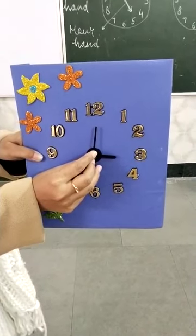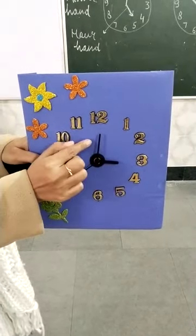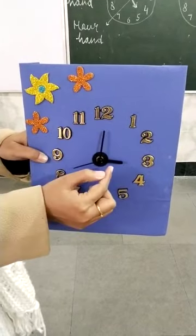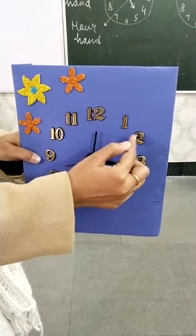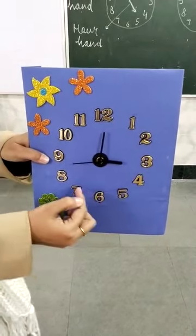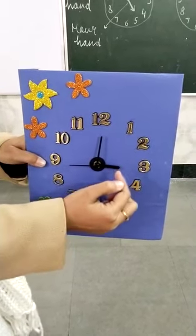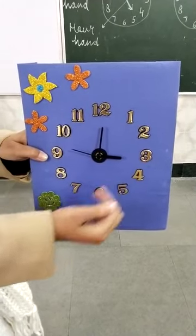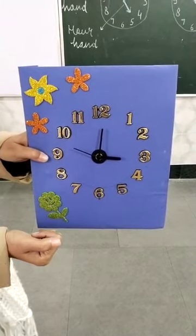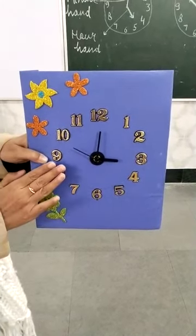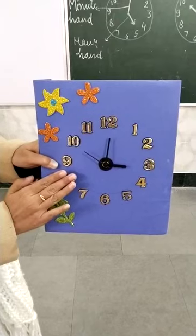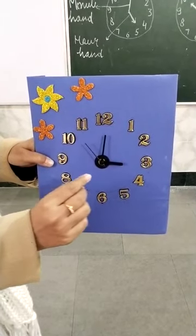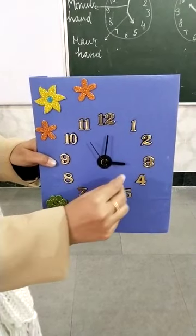The minute hand is the long hand, and it must be on twelve. The hour hand will be on any number. So you see where the hour hand is — the hour hand is on three. That means the time is three o'clock.